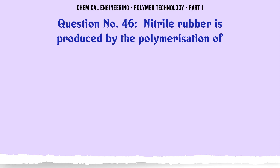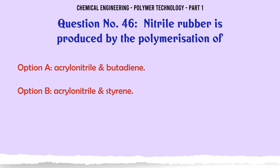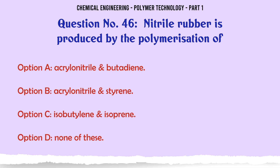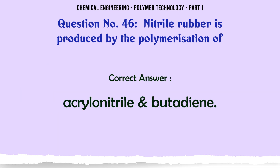Nitrile rubber is produced by the polymerization of: A. Acrylonitrile and butadiene, B. Acrylonitrile and styrene, C. Isobutylene and isoprene, D. None of these. The correct answer is Acrylonitrile and butadiene.